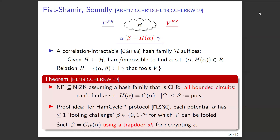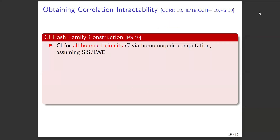We just need a CI family for all bounded circuits. Once we have that, we get NIZK for NP. And we can get a correlation intractable hash function for all bounded circuits using homomorphic computation, under SIS and LWE.